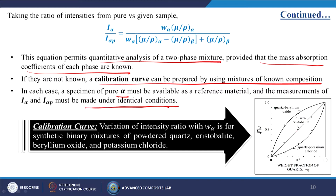If absorption coefficients are not known, a calibration curve can be prepared using mixtures of known compositions. In each case a specimen of pure alpha must be available as a reference, and measurements of I_alpha and I_alpha_pure must be made under identical conditions. The y-axis is I_q/I_q_pure and the x-axis is weight fraction of quartz W_q. The calibration curve shows intensity ratio variation with W_alpha for synthetic binary mixtures of powdered quartz, cristobalite, beryllium oxide, and potassium chloride.